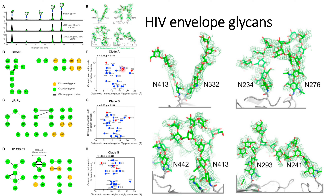They used nearest neighbor and glycan sequence analysis to check whether dispersed or crowded glycans have any kind of interaction or role in their interaction with antibodies. The red-colored glycans show high interaction with the antibodies, as we can see in all three panels — in all three variants: clade A, clade B, and clade G. However, they were not able to find any relationship between crowded and dispersed glycans in terms of their role in glycan interaction.